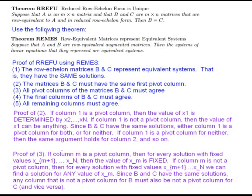In the textbook, there's this theorem called RREFU - Reduced Row Echelon Form is Unique. The statement of the theorem: suppose that A is an M by N matrix, and that B and C are M by N matrices that are row equivalent to A and in reduced row echelon form, then B equals C. In other words, two reduced row echelon forms that are row equivalent to some matrix are actually the same matrix. There's only one reduced row echelon matrix that's equivalent to any given matrix.